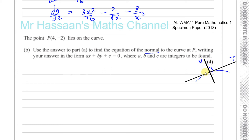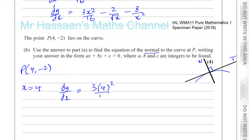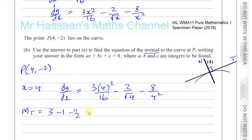To find the gradient of the tangent at P, we substitute x equals 4 into the gradient function dy/dx. So we get 3 times 4 squared over 16, minus 2 over the square root of 4, minus 8 over 4 squared. That gives 3 times 16 over 16 which is 3, minus 2 over 2 which is 1, minus 8 over 16 which is a half. So 3 minus 1 minus a half equals 3 over 2. The gradient of the tangent is 3/2.